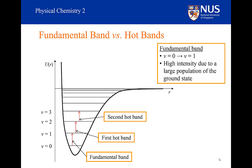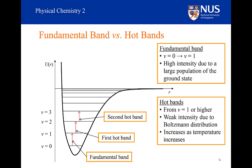However, there will be a difference in the response of the spectrum of the hot bands compared to the overtones as we change the temperature. As we increase the temperature, the populations of the excited vibrational states will increase at the detriment of the population of the V equals 0 state. This means that the intensities of the hot bands will increase, and the intensity of the fundamental band will decrease as we increase the temperature. This behaviour is not the same with the overtones. With overtones, the initial state is always V equals 0, so the intensities of the overtones will also decrease with increasing temperature, in the same way that the intensity of the fundamental band decreases with increasing temperature.